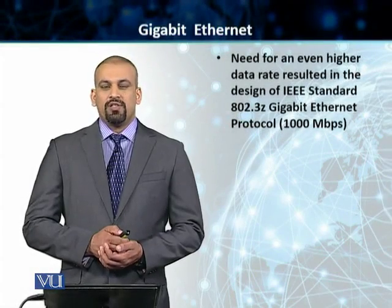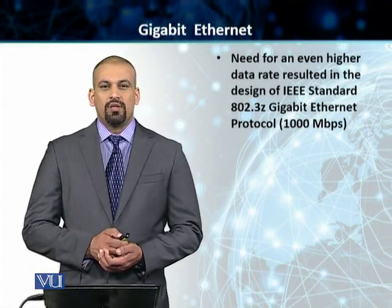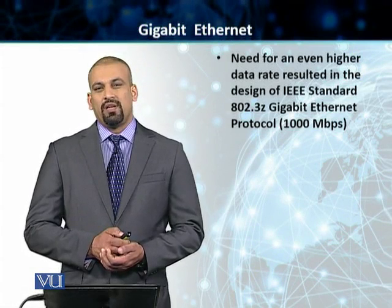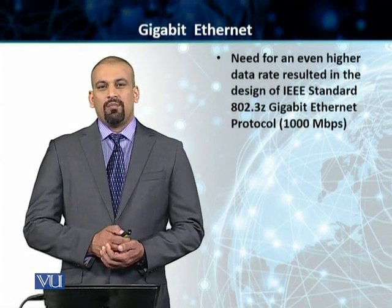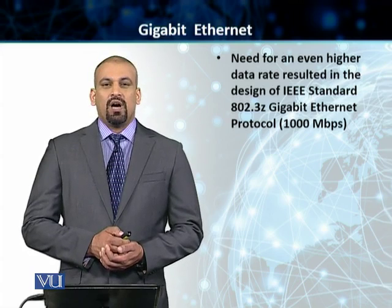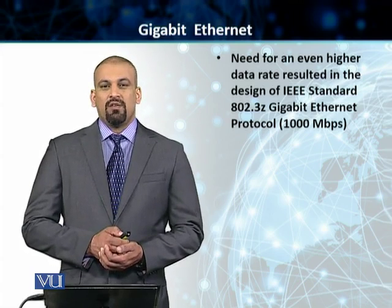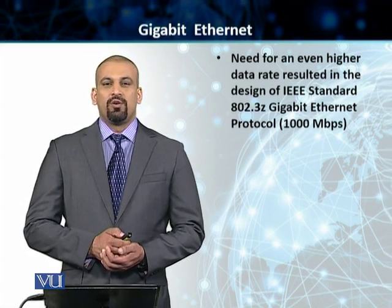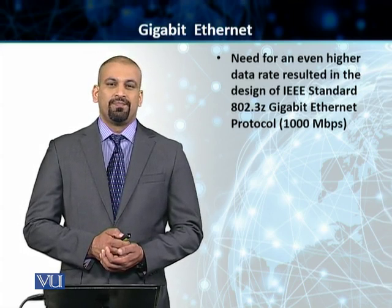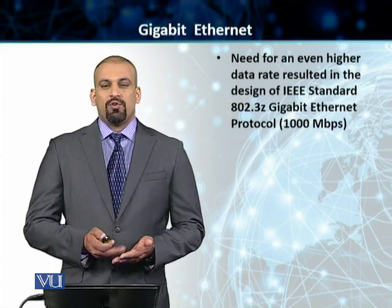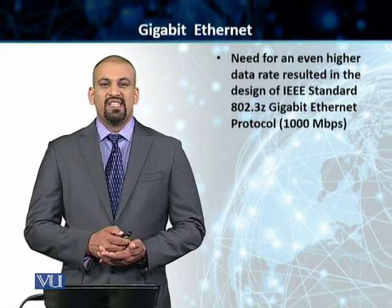The third generation of Ethernet is called Gigabit Ethernet. As the name indicates, this was able to support higher data rates — specifically 1 Gigabit per second. The standard was created by IEEE and it was called 802.3Z.